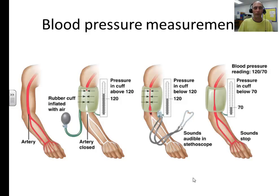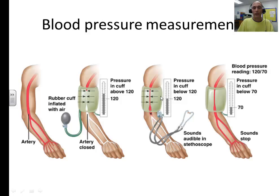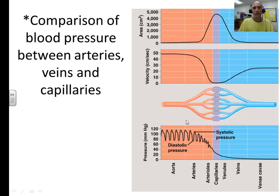You've probably seen blood pressure cuffs at the doctor's office or at the pharmacy. You stick your arm in and it squeezes really tightly — it's measuring blood pressure in the brachial artery. It compresses the artery, then releases it, making a noise you can hear through a stethoscope. We can only measure blood pressure in the arteries; there is no measurable blood pressure in veins, and capillaries are too distributed to measure.